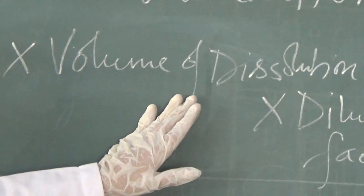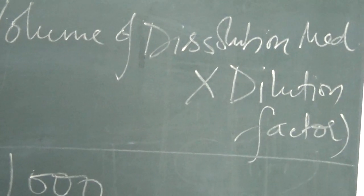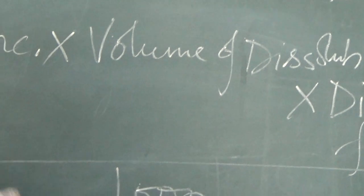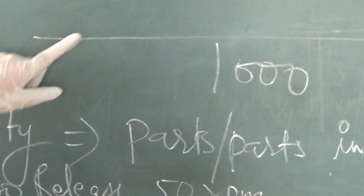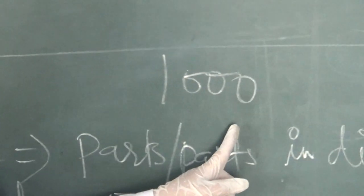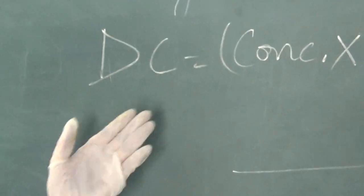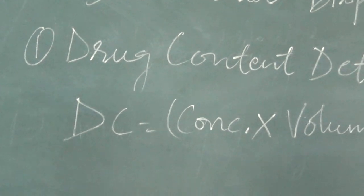If you take 5 ml sample out after 15 or 30 minutes, then you have to add proper blank solution to maintain the 900 ml level and it is divided by 1000. This is how we can calculate drug content determination.